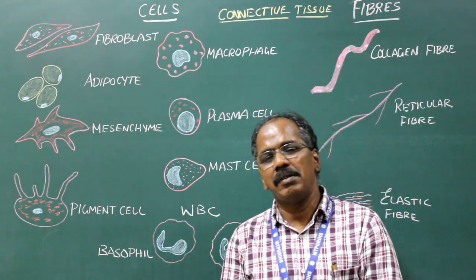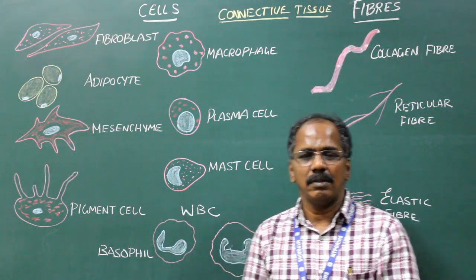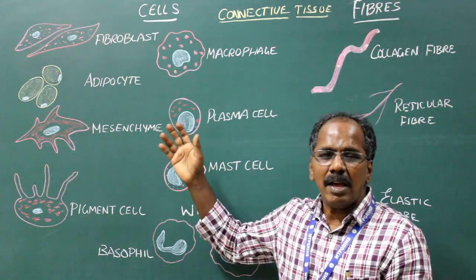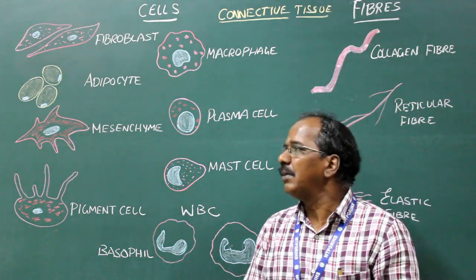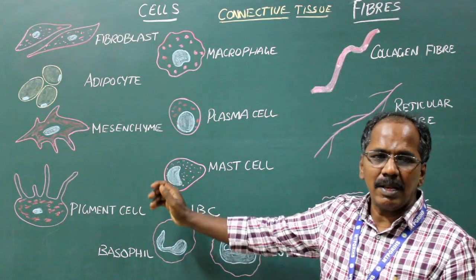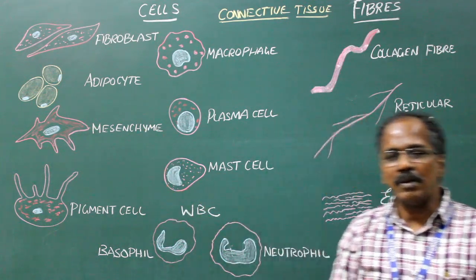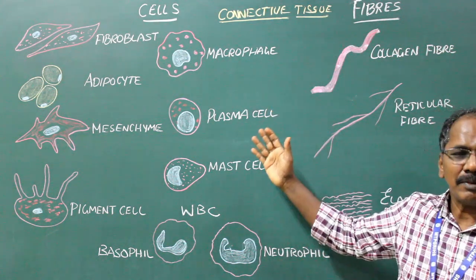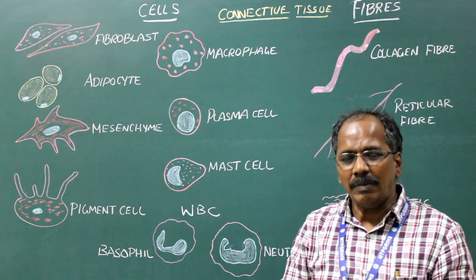Cells of connective tissue: The cells are divided into two types: fixed cells and wandering cells. The fixed cells include fibroblast, adipocyte, pigment cell and mesenchymal cells. The wandering cells include macrophage, plasma cell, mast cell and white blood cells.